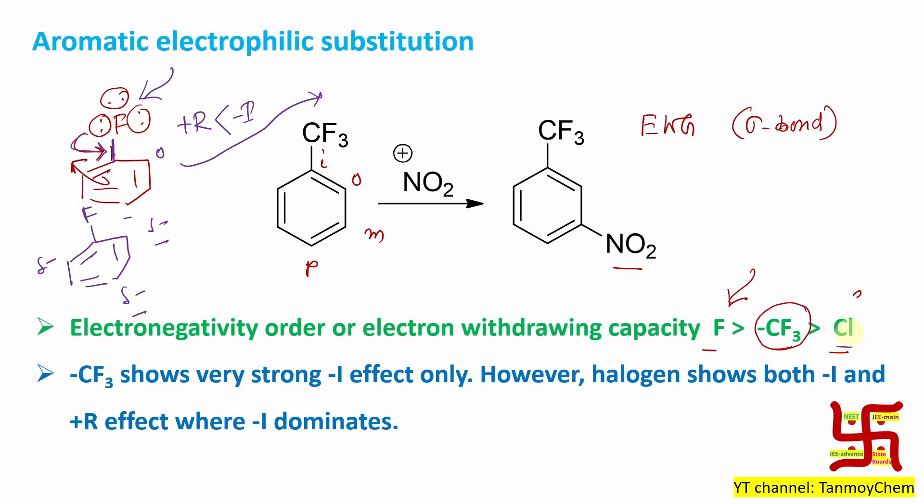But CF3 doesn't show any plus R effect. It has only minus I effect. That's why it results selectively in the nitro product at the meta position. This is actually a very important concept. I think you should remember.